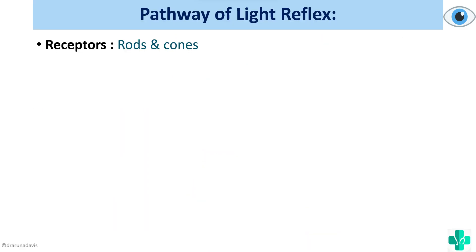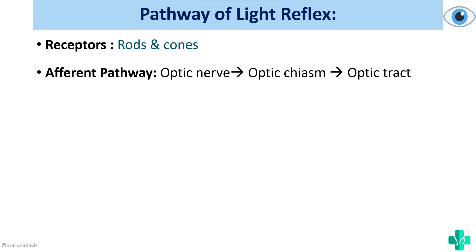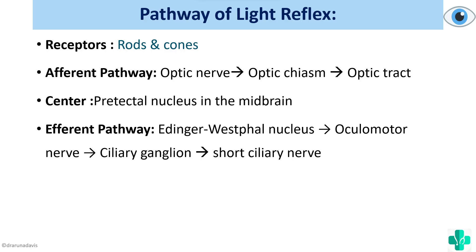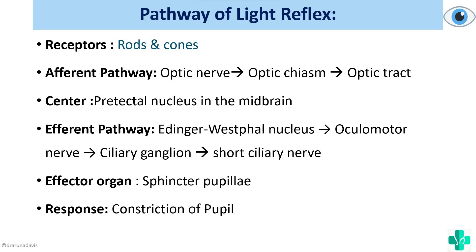To summarize the light reflex pathway: the receptors are the rods and cones; the afferent pathway is the optic nerve, optic chiasm, and optic tract; the center is the pre-tectal nucleus of the midbrain; the efferent pathway is via the Edinger-Westphal nucleus, oculomotor nerve, ciliary ganglion, and short ciliary nerve; and the effector organ is the pupillary constrictor, giving constriction of the pupil as the response.